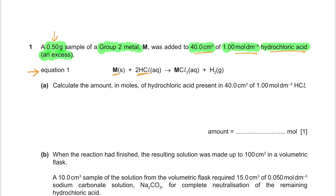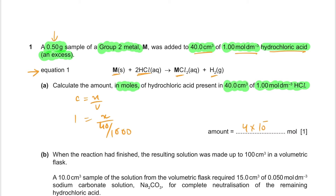The metal reacts with hydrochloric acid to give metal chloride and hydrogen gas. Calculate the amount in moles of HCl present in 40 cm³ of 1 mol/dm³ HCl. Using C = n/V: n = 1 × (40/1000) = 0.04 mol, or 4×10⁻² mol. Remember, these moles are in excess.